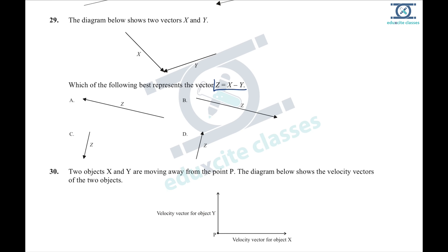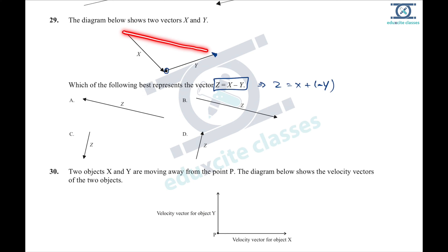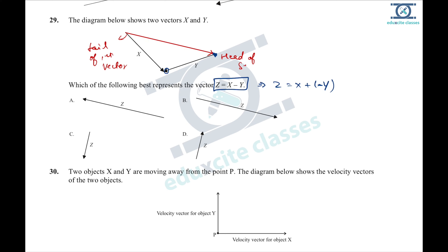Question 29: z = x − y, which can be rewritten as z = x + (−y). For subtraction, reverse the direction of y to get −y. Then use tip-to-tail addition: place −y at the head of x, and the resultant goes from the tail of x to the head of −y. Option B is the most appropriate answer.